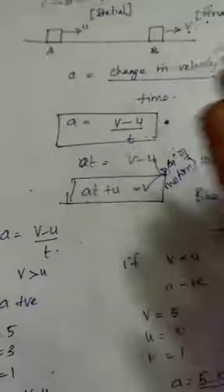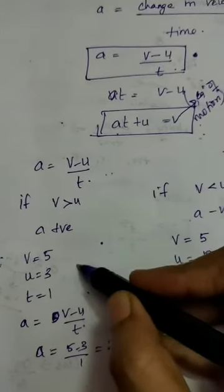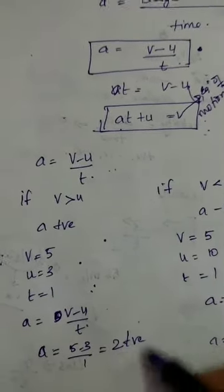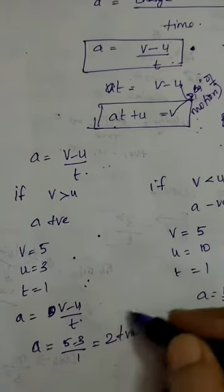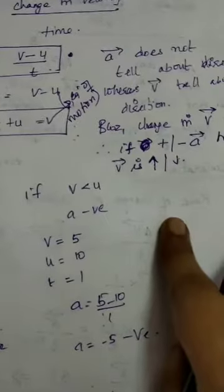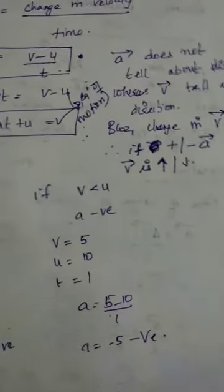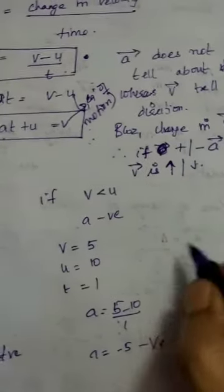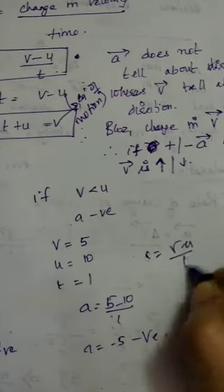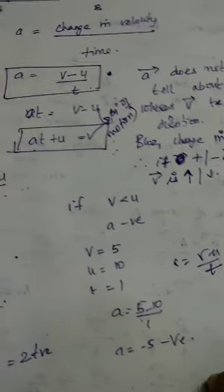Now I will give values to v, u, and t to show positive and negative acceleration. If v is greater than u — for example v = 5, u = 3, t = 1 — then a = (5 − 3) / 1 = 2, which is positive. So when v is greater than u, we get positive acceleration.